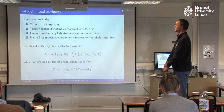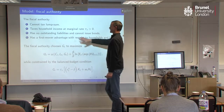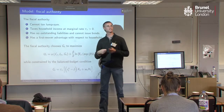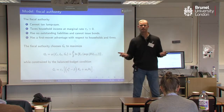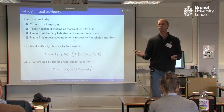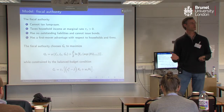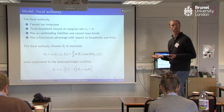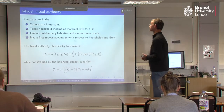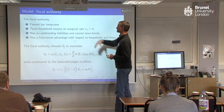Now the fiscal authority. The fiscal authority can't tax lump sum, so taxes are going to be distortionary. If the fiscal authority could tax lump sum, there would be no time inconsistency problem in the model because there'd be no distortion to worry about. So we're going to have distortionary taxes, and taxes are going to be positive.